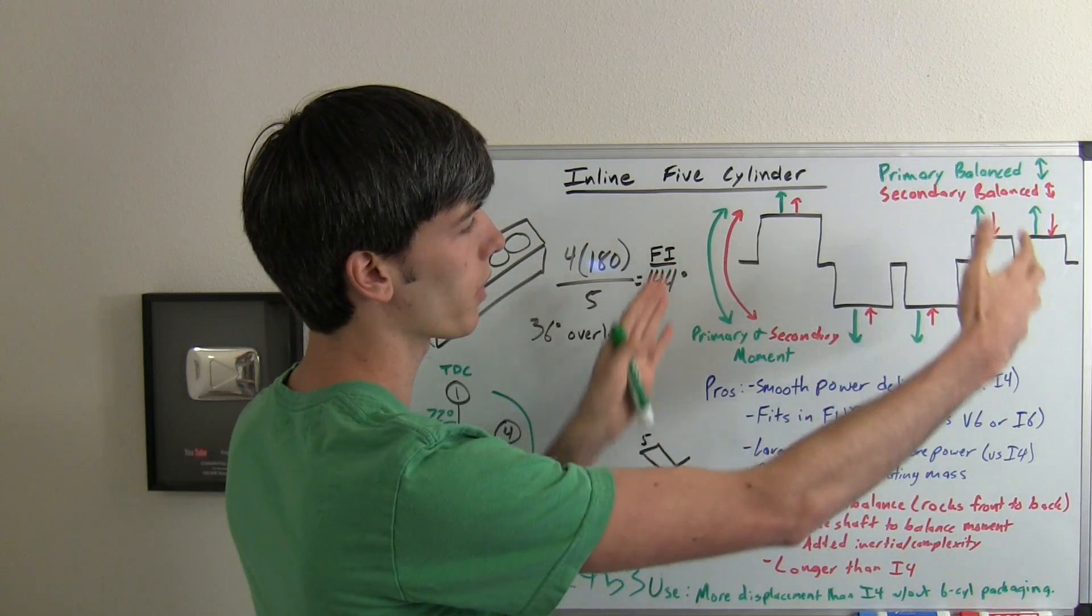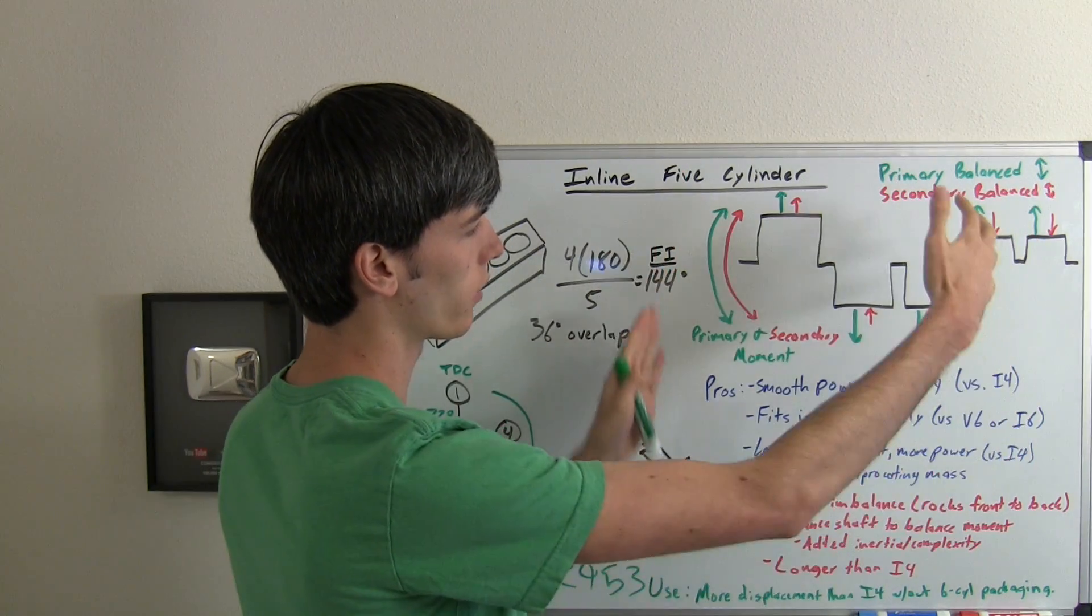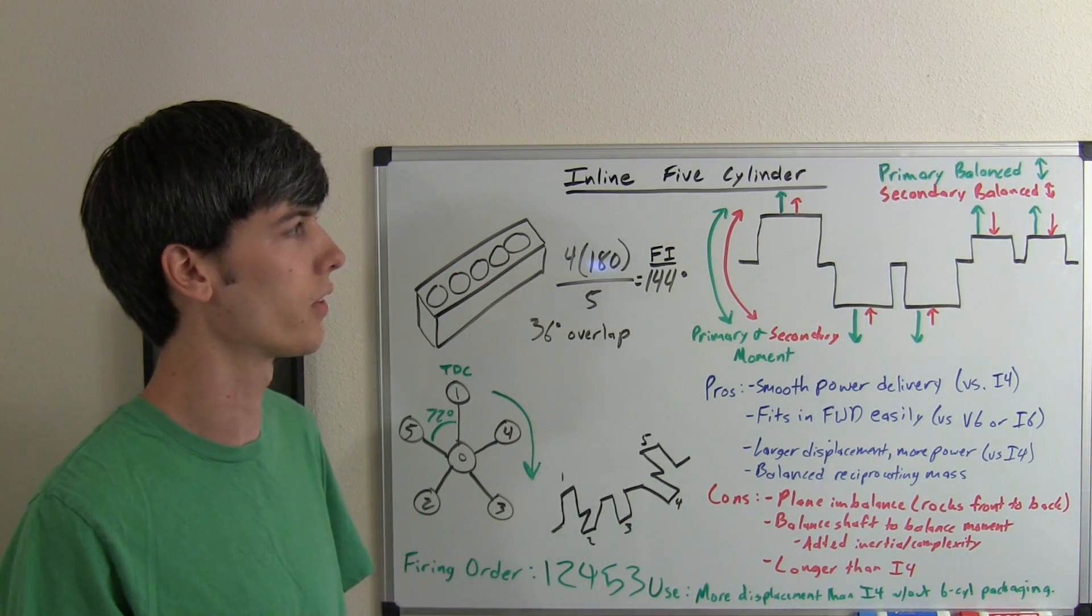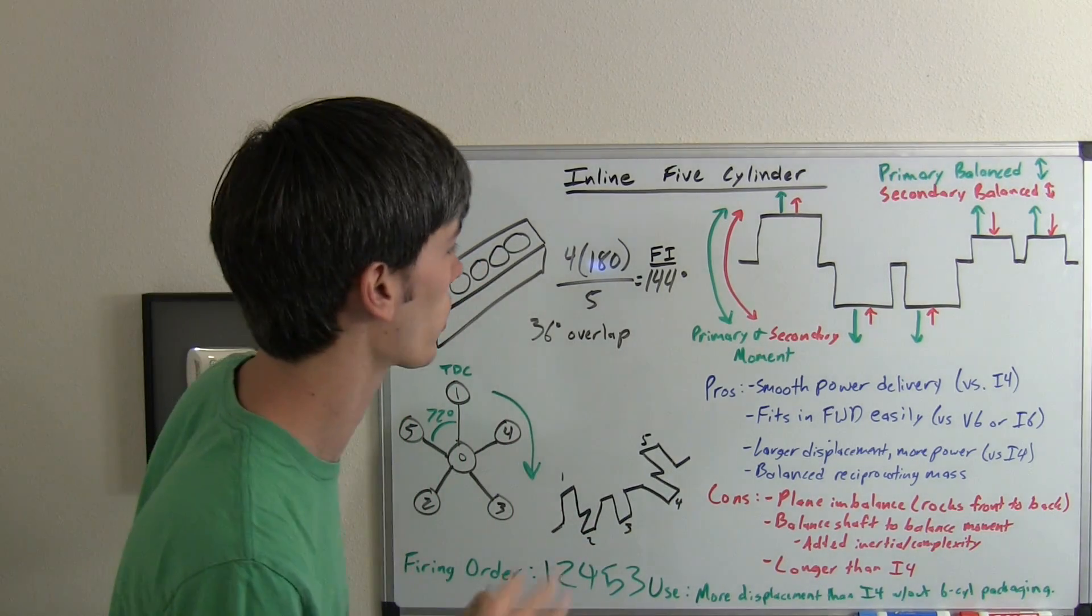Where they're not going to balance out is right to left along the length of the engine. Both your primary and secondary forces are going to kind of rock the engine back and forth like this, so it's common with five-cylinder engines that they'll put in a balancing shaft to kind of counteract that.